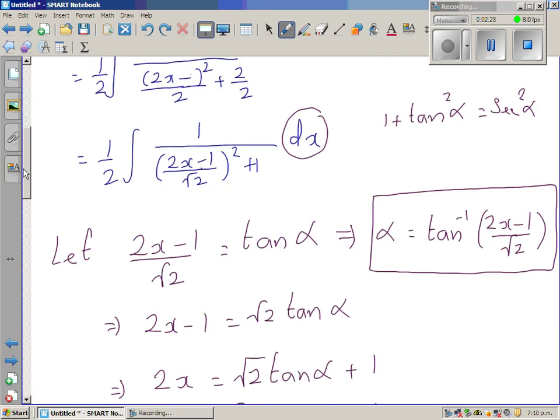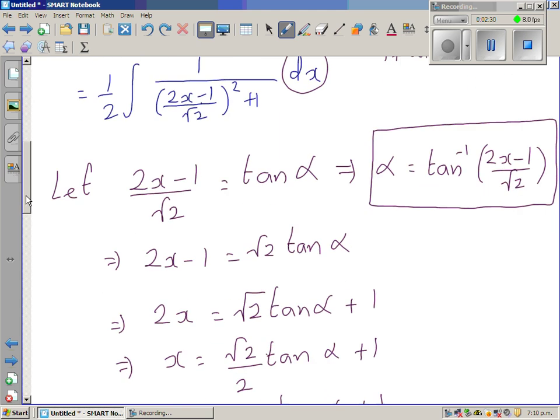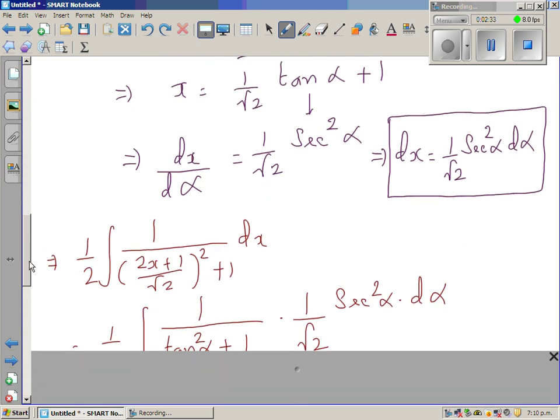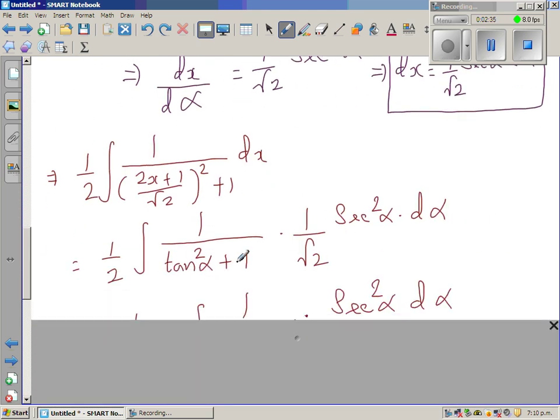1 over 2, this and this are the same. 1 over 2 over this whole thing becomes 1 over 2 tan squared alpha plus 1 and dx becomes this.